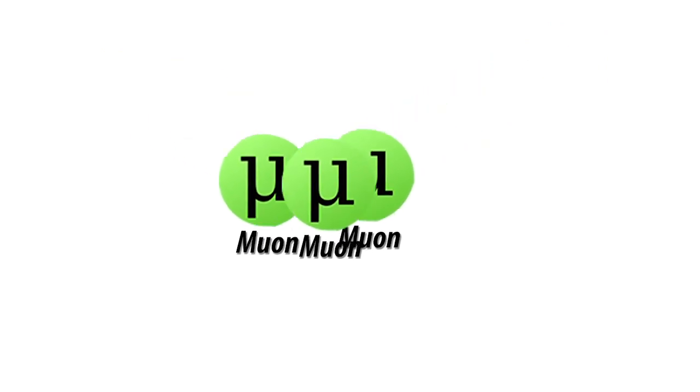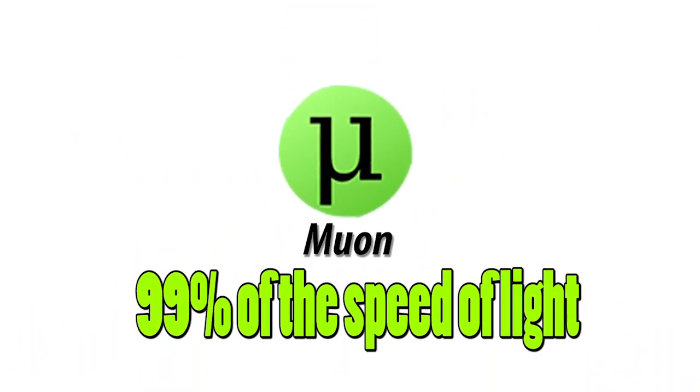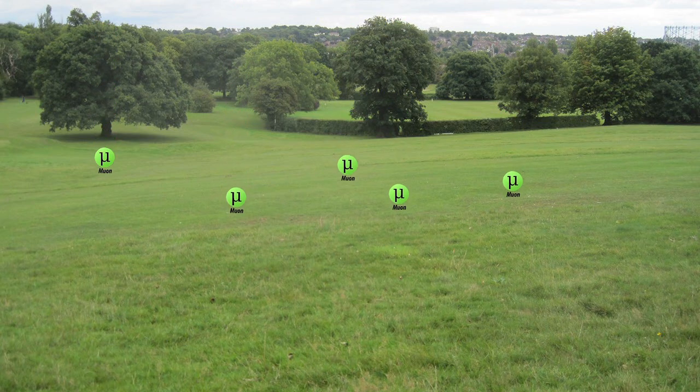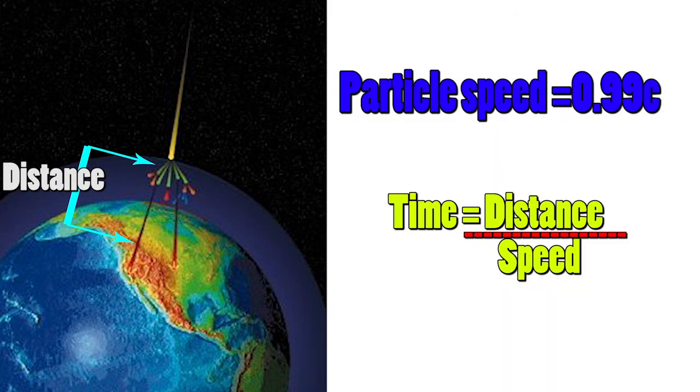These muons travel at 99% of the speed of light. So we can measure the amount of muons reaching the Earth's surface and they are way more than expected. As we know the particle speed and the distance between the ground and where they are created, we can calculate the time required for the muons to reach the ground.